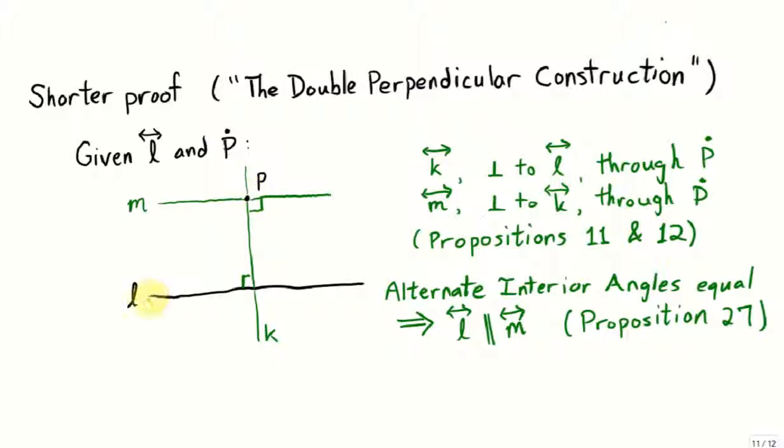Given our line L and our point P not on that line, construct a perpendicular to the line L through the point P. We'll call that line K.